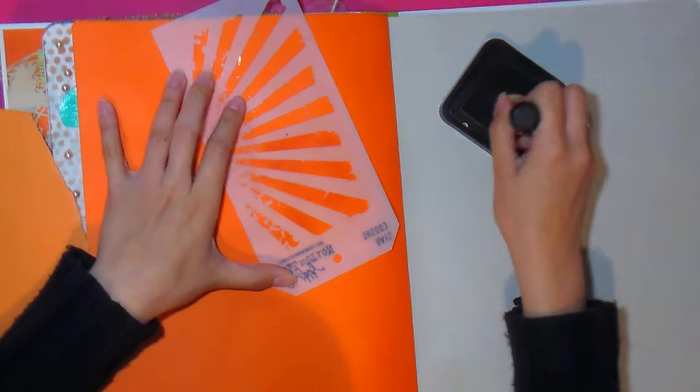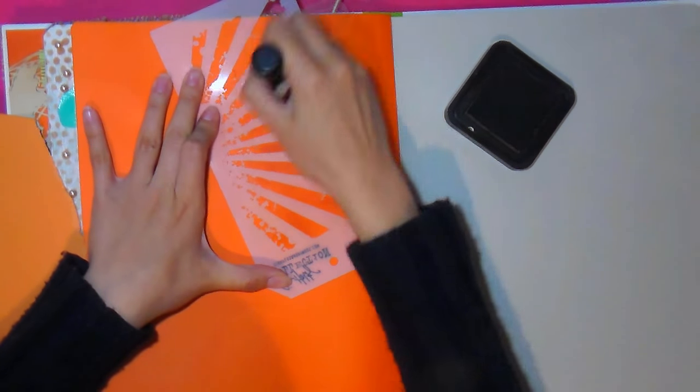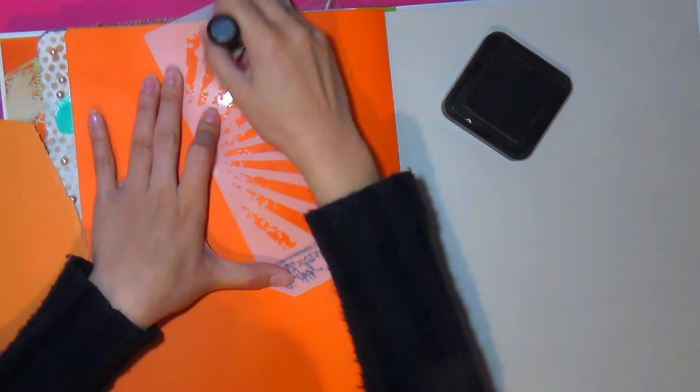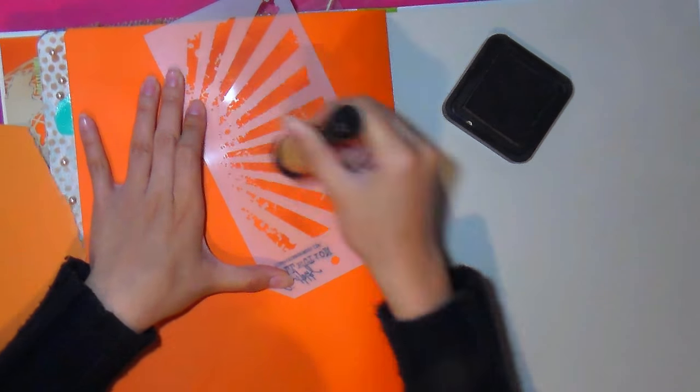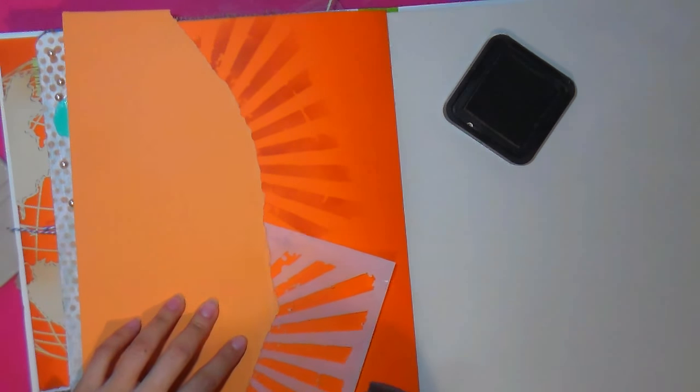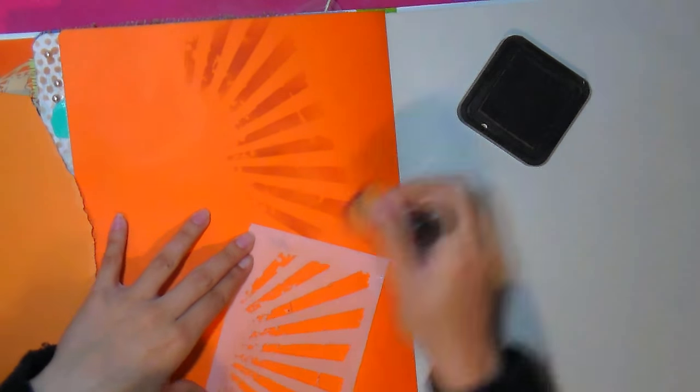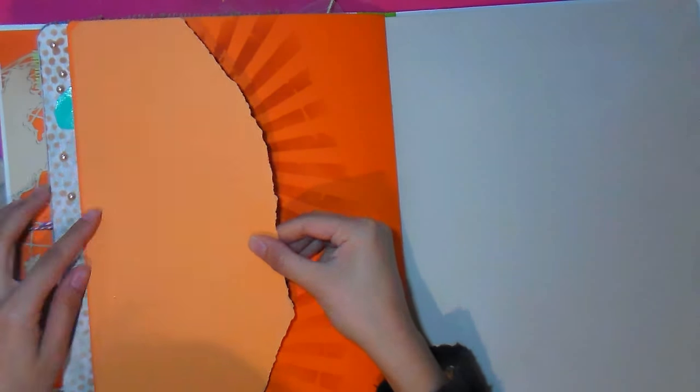We're going to do it with many colors. This page that we're doing first is orange and blue, blue marino, but we're going to add a little bit of green. When I do the album, I always ask the person what colors they want, and this time they told me orange and green.